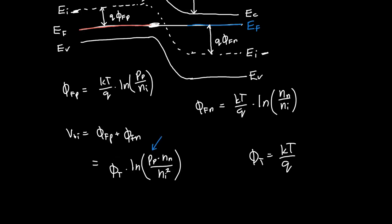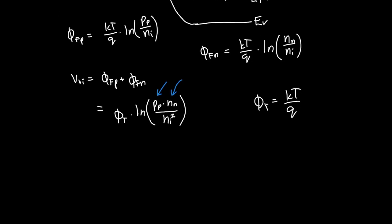And so this is almost what we wanted. This has a relationship between the holes on the P-side and the electrons on the N-side. So it's almost there. And let's massage it a little bit more just to avoid using logarithms. So let's divide both sides by φT and then exponentiate. And we'll get P on the P-side times N on the N-side divided by NI squared is just equal to E to the VBI over φT.